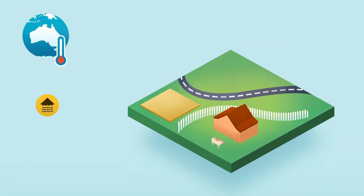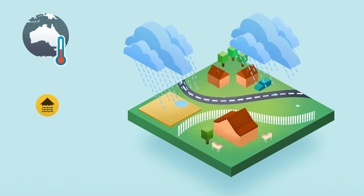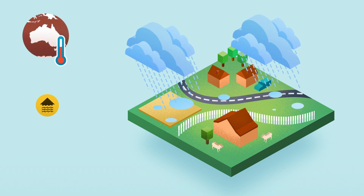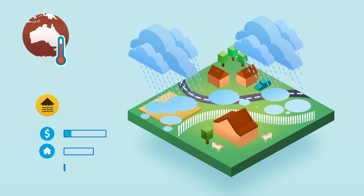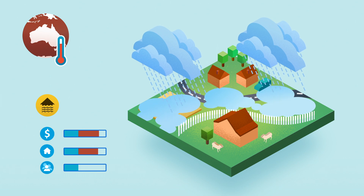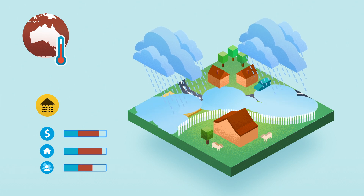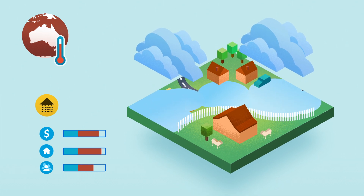Climate change means a warmer atmosphere, which can cause higher intensity rainfall and more severe flash floods. In most cases, we can identify an increase in likelihood and impacts of floods that result.